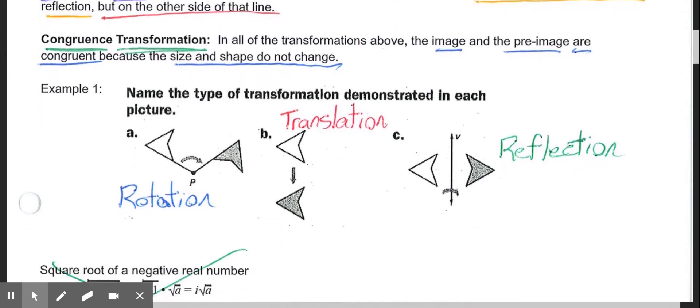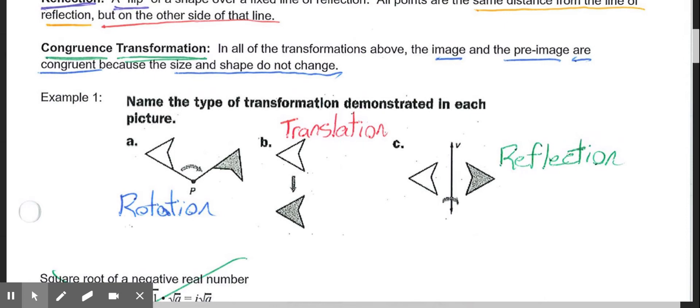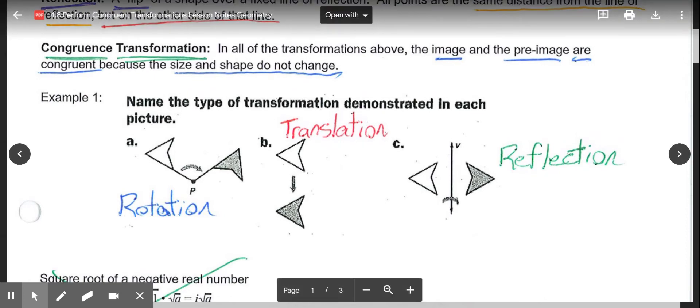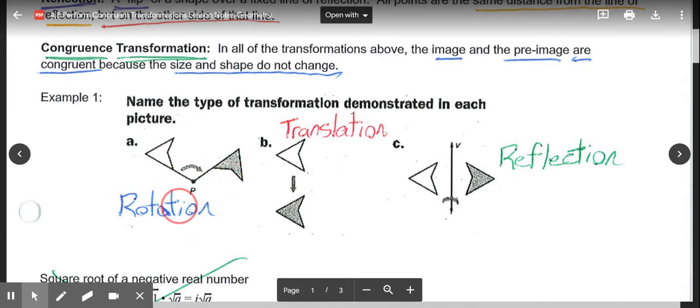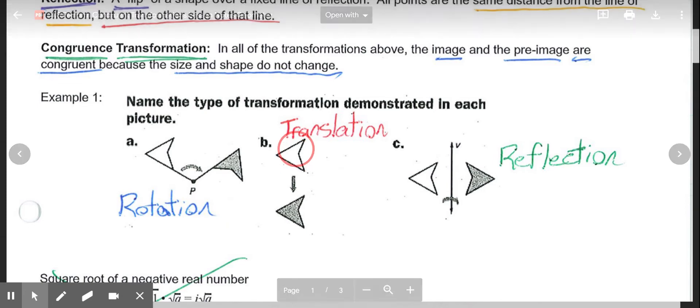Example one is just applying the vocabulary to what we're seeing. This white arrow rotating, spinning around point P to give us this gray one - that would be a rotation. The white shape slides down to the gray one, so that would be a translation. The white shape is flipped over the line of reflection, which is V, so that would be a reflection.